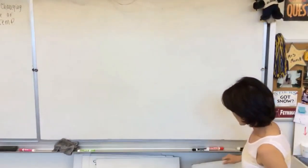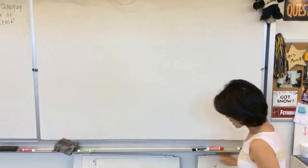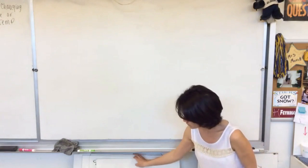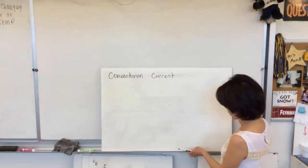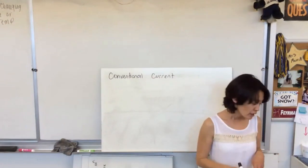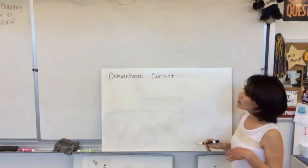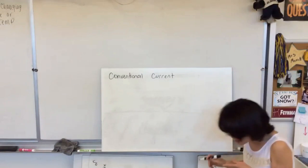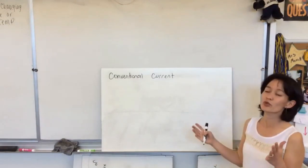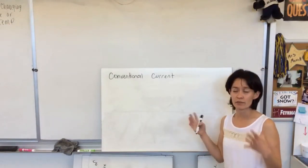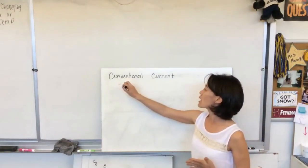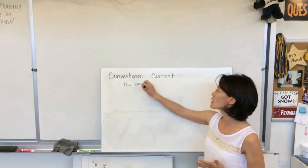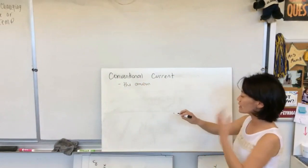So that gets us into the idea of current, and we're going to define this starting up with what's called conventional current. So if I have two points that have a potential difference, and I'm looking at connecting them, then conventional current is the amount of current that flows past a given point in a certain amount of time.